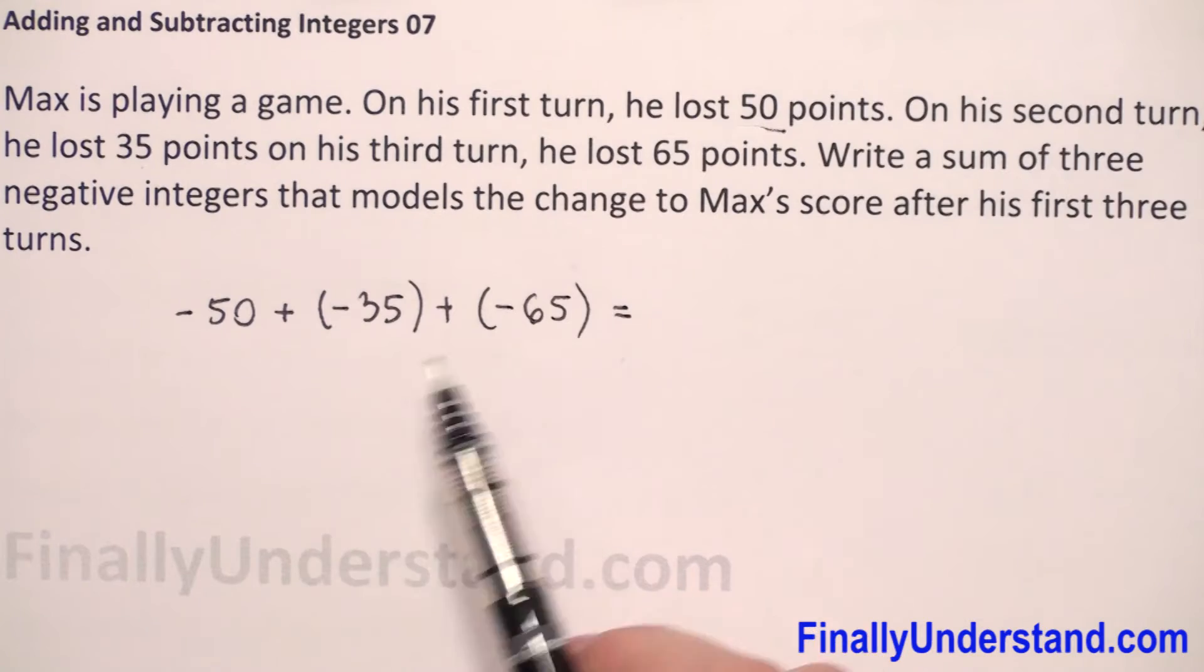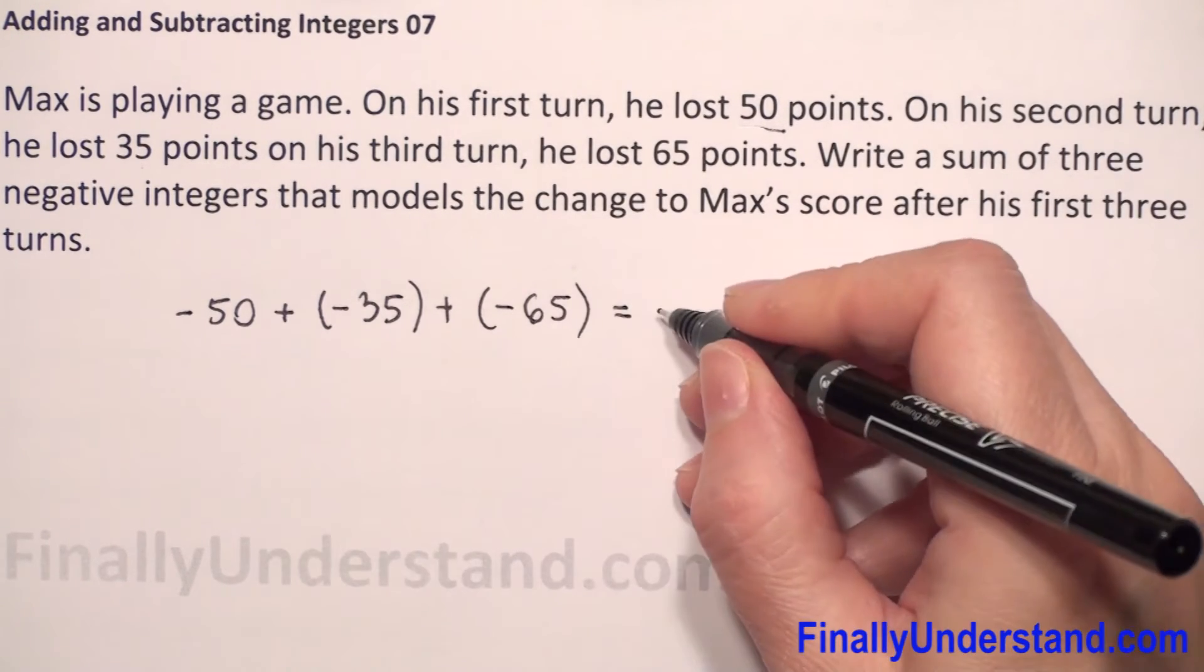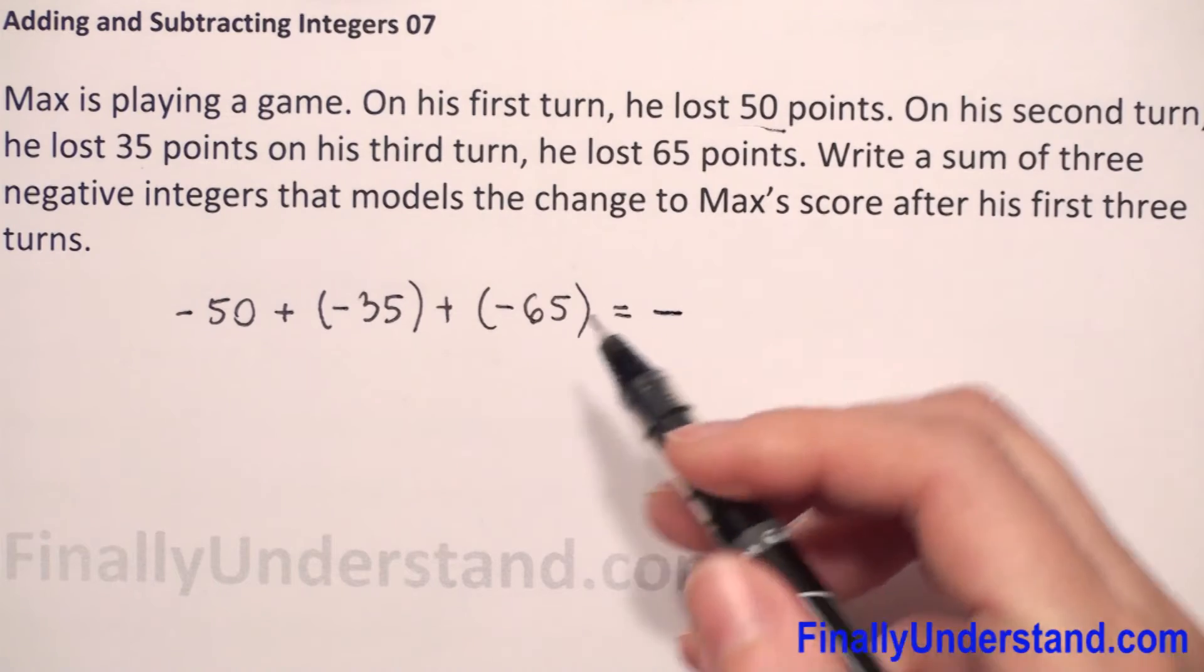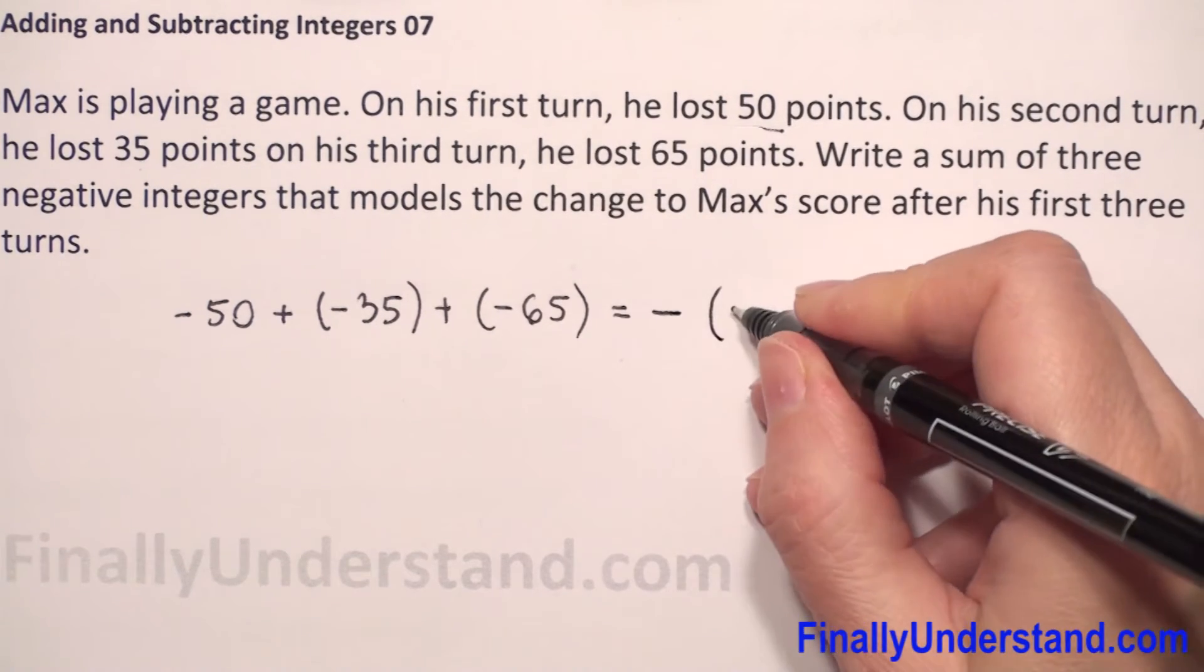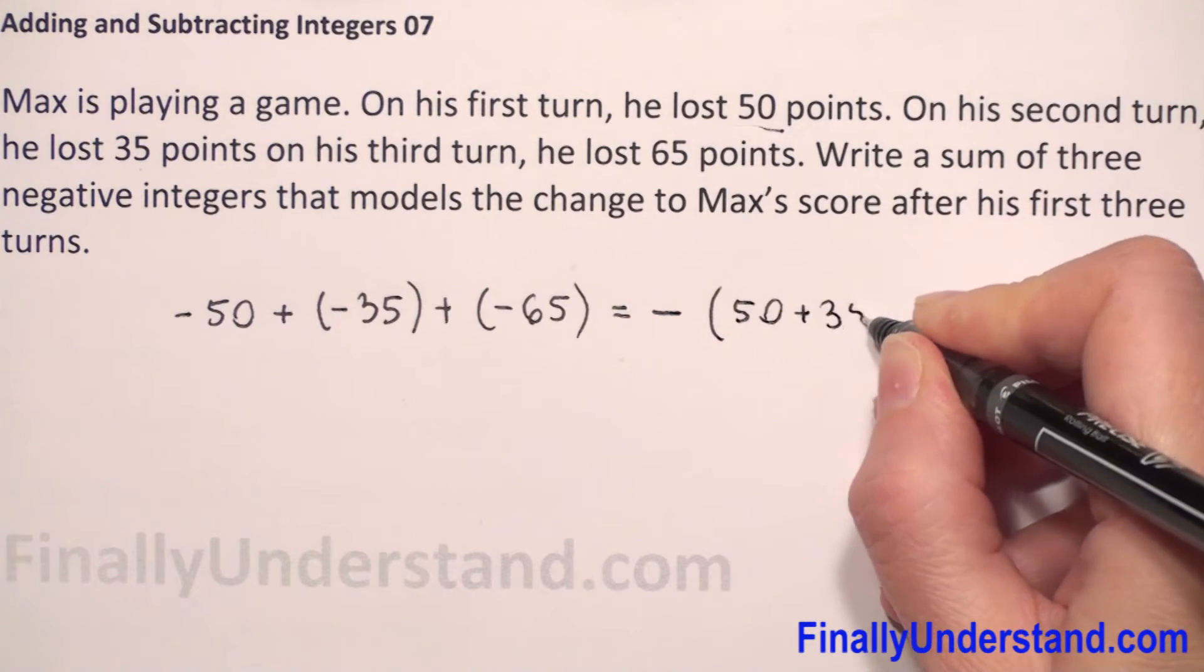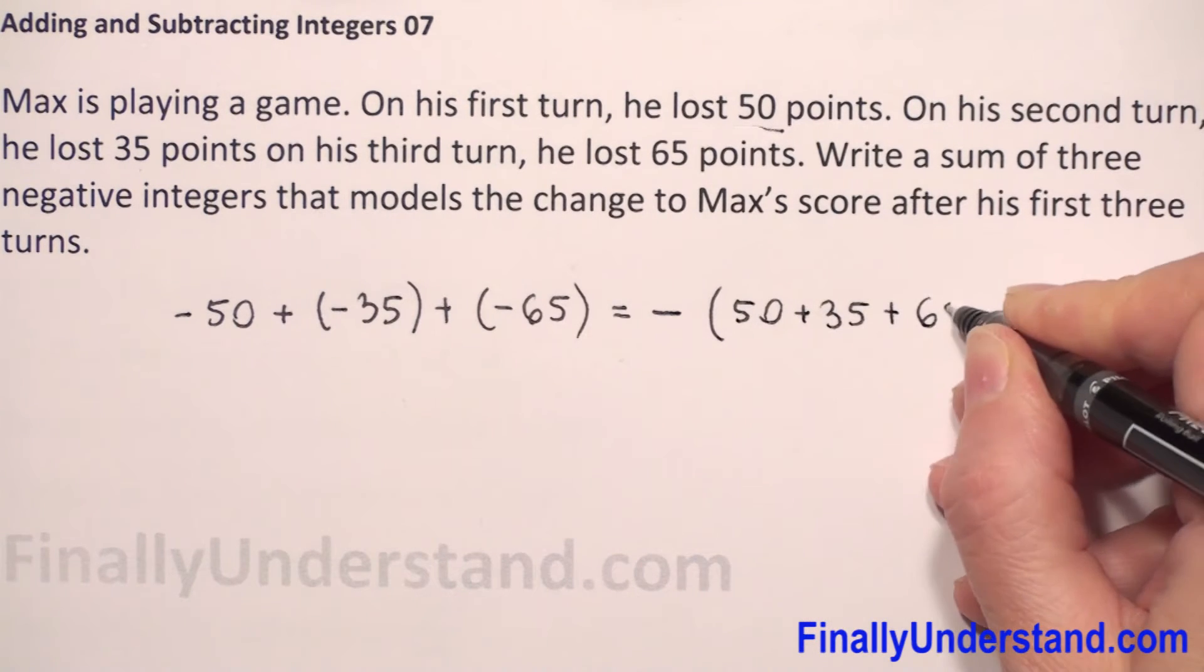Because we have negative integers, all of them are negative, so we copy the negative sign. And we have to just add these three numbers. So in parenthesis we can write that we have 50 plus 35 plus 65.